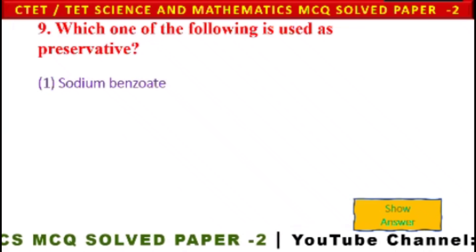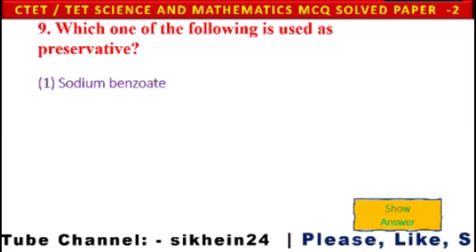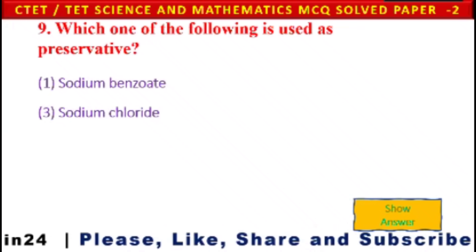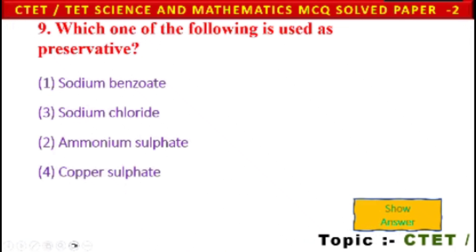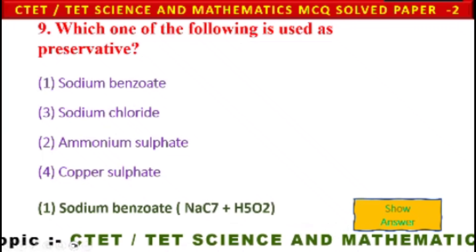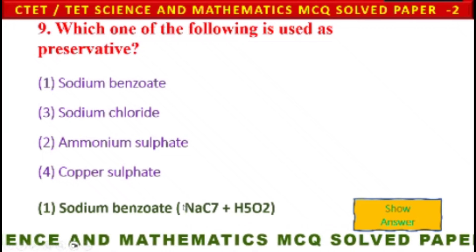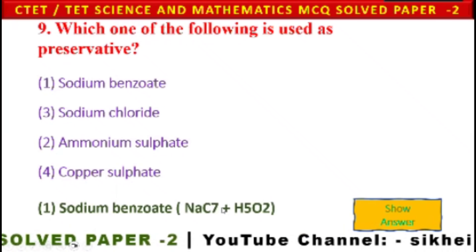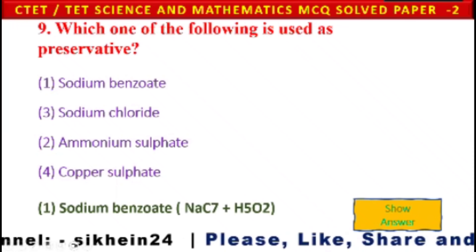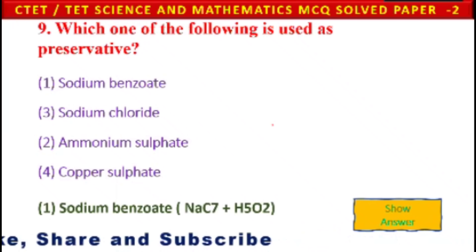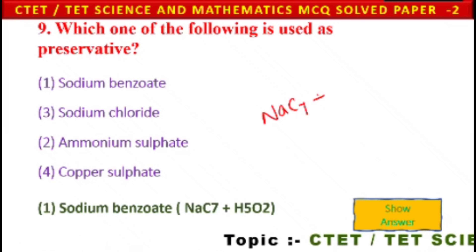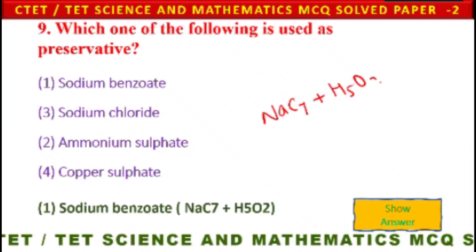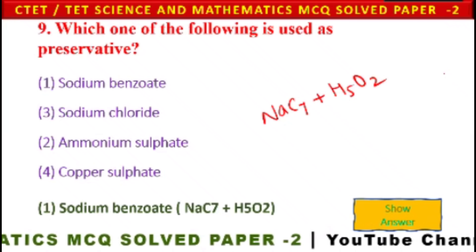Next question: Which one of the following is used as a preservative? 1) Sodium benzoate, 2) sodium chloride, 3) ammonium sulfate, 4) copper sulfate. The answer is sodium benzoate. Its formula is NaC7H5O2.